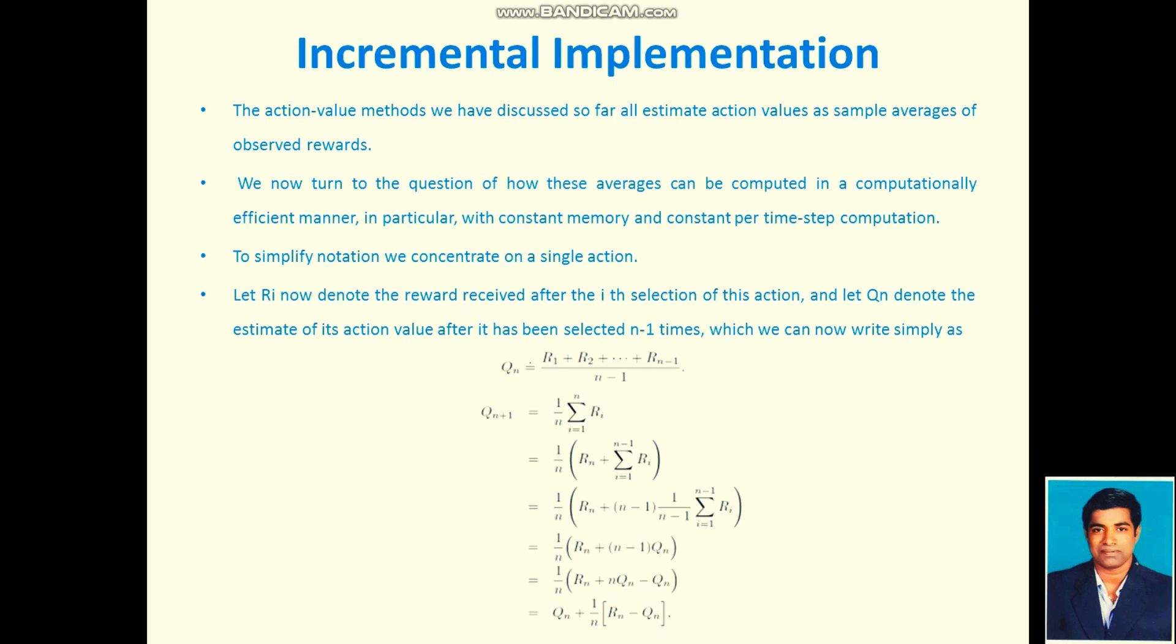To simplify notation, we concentrate on a single action. Let Ri denote the reward received after the ith selection of this action, and let Qn denote the estimate of its action value after it has been selected n minus 1 times, which we can write as Qn equals sum of r1 plus r2 plus up to rn minus 1 divided by n minus 1. We can mathematically represent Qn plus 1 equals 1 by n sum of i equals 1 to n, Ri.